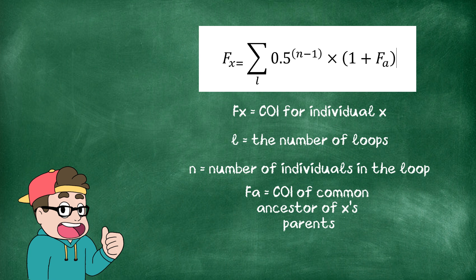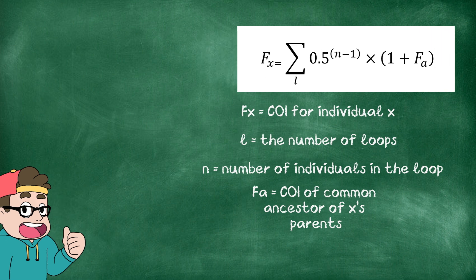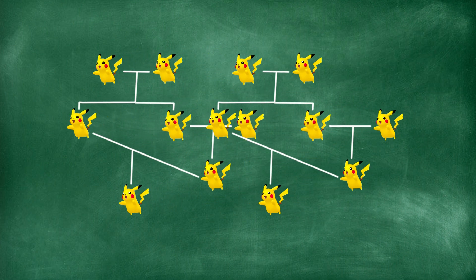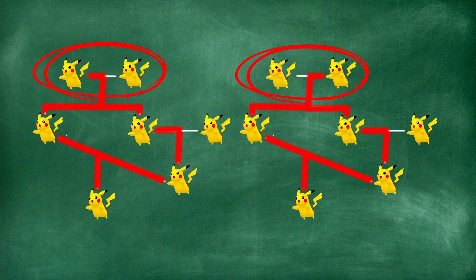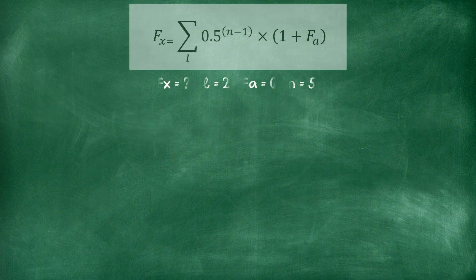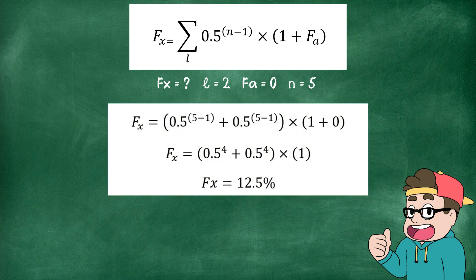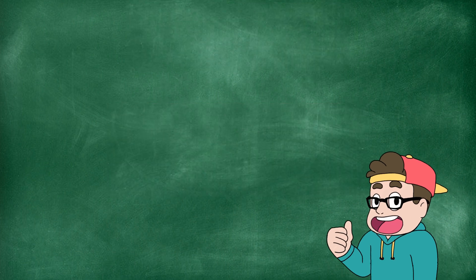What do I mean by loop? Let me draw that out for you. As you can see, we have two loops, and in each loop we have five members. Also, the common ancestors — the two at the very top — are not inbred, so their COI is zero. Plugging in these numbers gives us a COI of 12.5%, which is the chance of the alleles being identical. If they continue to grow their lineage and keep creating loops, the COI will get bigger and bigger. The bigger the COI, the easier it is to predict what traits will be passed down to the offspring.